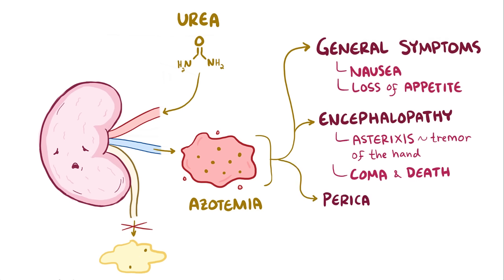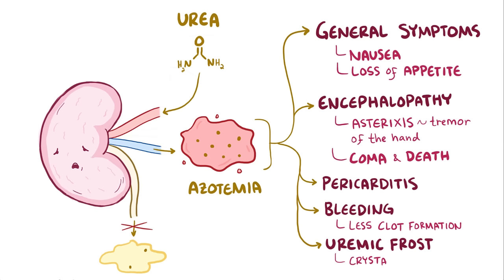This buildup can also cause pericarditis, which is inflammation of the lining of the heart. In addition, there can also be increased tendency for bleeding, since excess urea in the blood makes platelets less likely to stick to each other, and so there is less clot formation. Finally, in some cases, someone can develop uremic frost, where urea crystals can deposit in the skin and they look like powdery snowflakes.